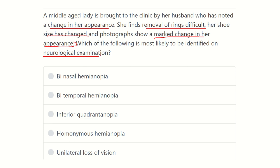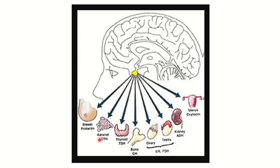The options are: binasal hemianopia, bitemporal hemianopia, inferior quadrantanopia, homonymous hemianopia, and unilateral loss of vision. Now let's look at some slides. Here we can see the pituitary gland, which is responsible for different types of development in the body.